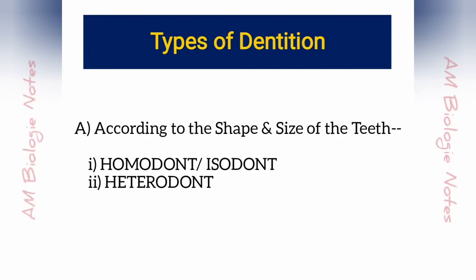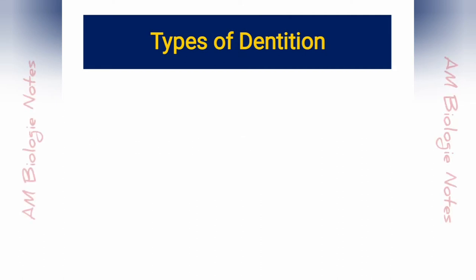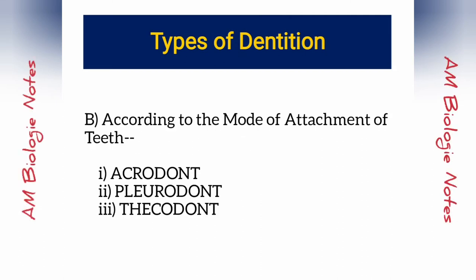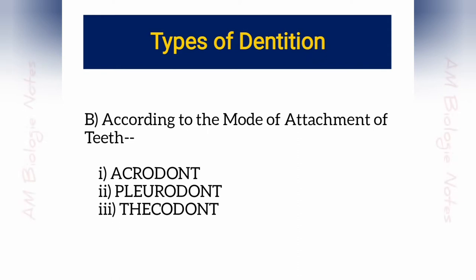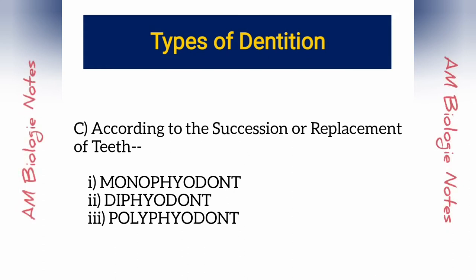According to different criteria, dentition can be classified in many ways. According to the shape and size of the teeth, dentition may be homodont or isodont, and heterodont. According to the succession or replacement of teeth, the dentition may be monophyodont, diphyodont, and polyphyodont. I will now discuss all the different types of dentition with figures and examples.